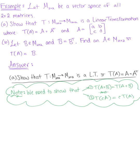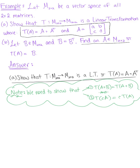In this example, we let M₂ₓ₂ be the vector space of all 2 by 2 matrices. In Part A, we are asked to show that the transformation from M₂ₓ₂ to M₂ₓ₂ is a linear transformation, where T(A) = A + Aᵀ, and A is some 2 by 2 matrix defined as [a, b; c, d]. In Part B, we let matrix B be an element of this vector space with B = Bᵀ, and the goal is to find matrix A such that T(A) = B.